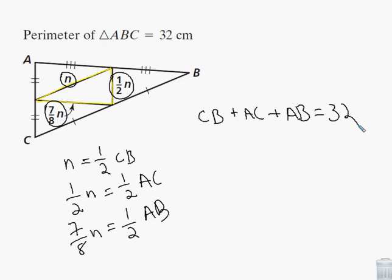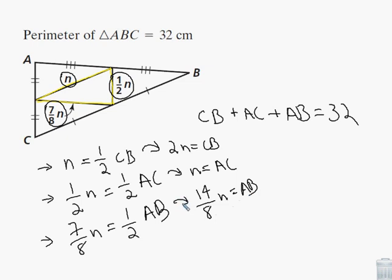And we can take each of these three equations and solve them for those three quantities. This one, if we solve it, we just multiply both sides by two, we get 2n equals CB. This one, if we solve it, we just multiply both sides by two, n equals AC. We're multiplying both sides by two in all of these problems. The third one, when we multiply both sides by two, we get fourteen-eighths n equals AB, which we can simplify. Seven-fourths n equals AB.